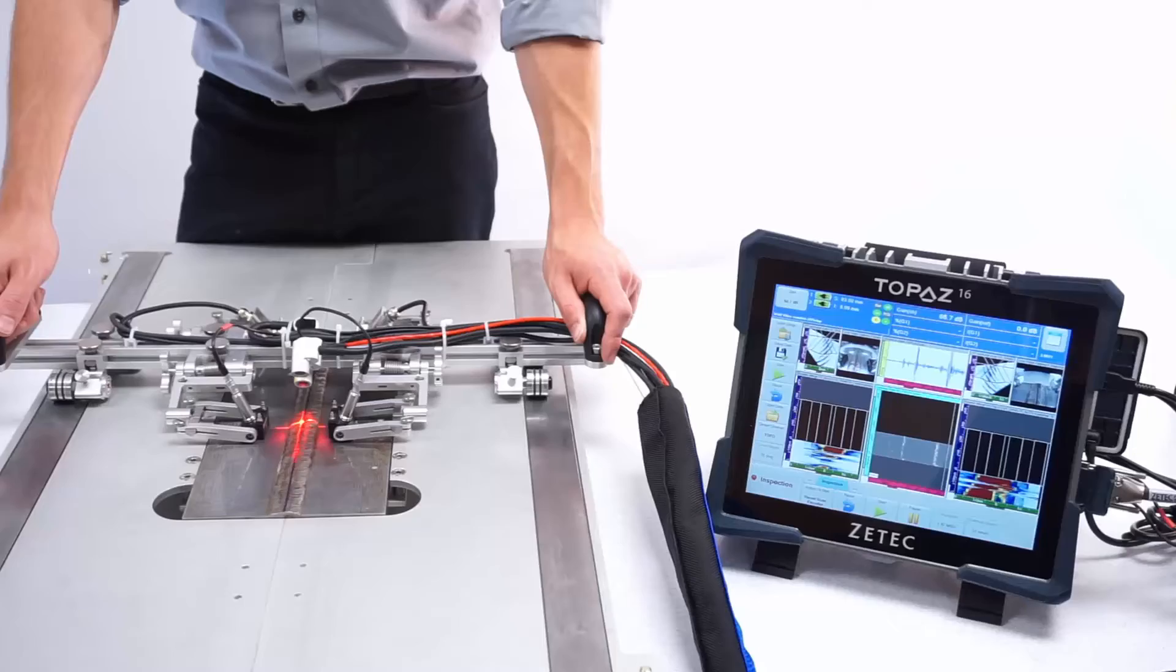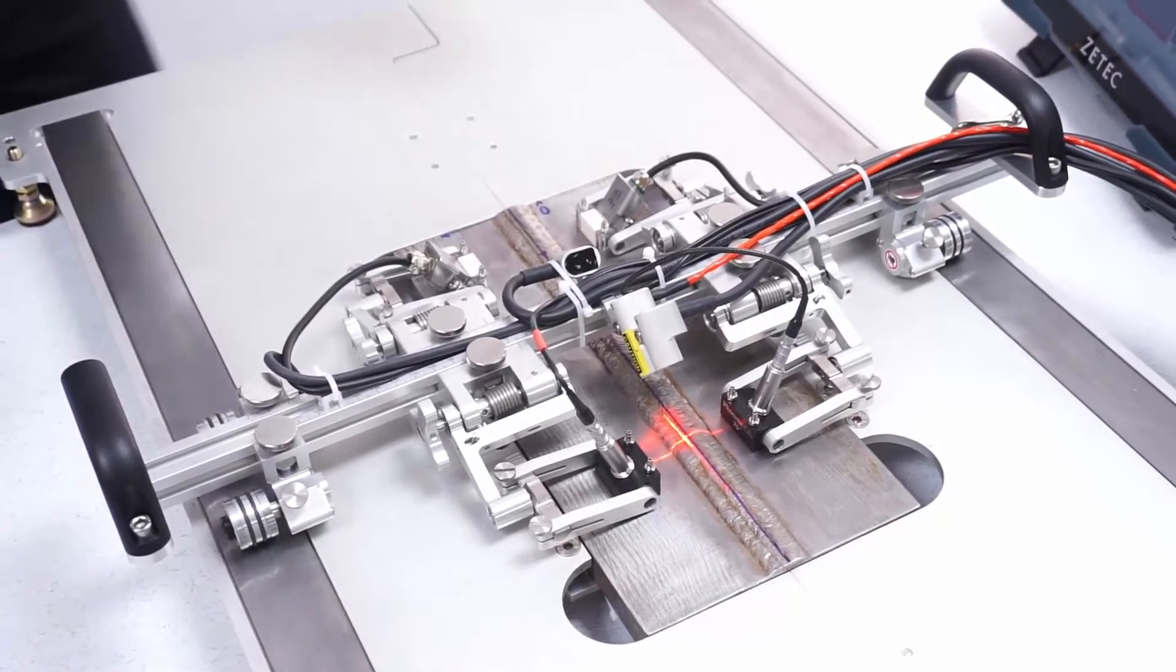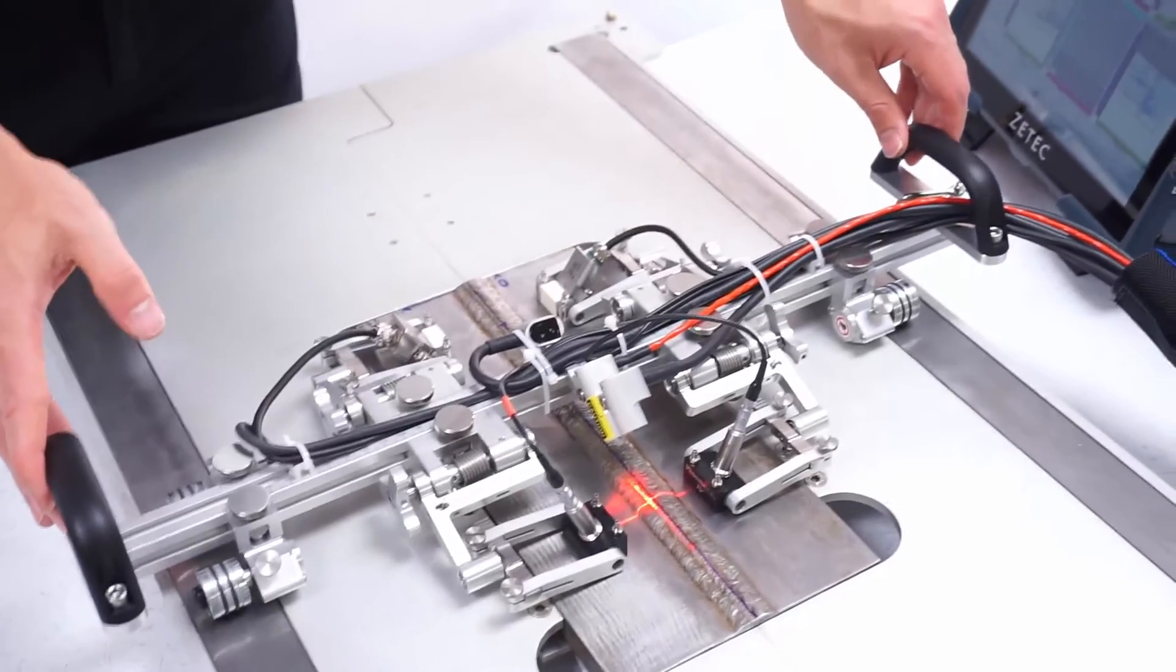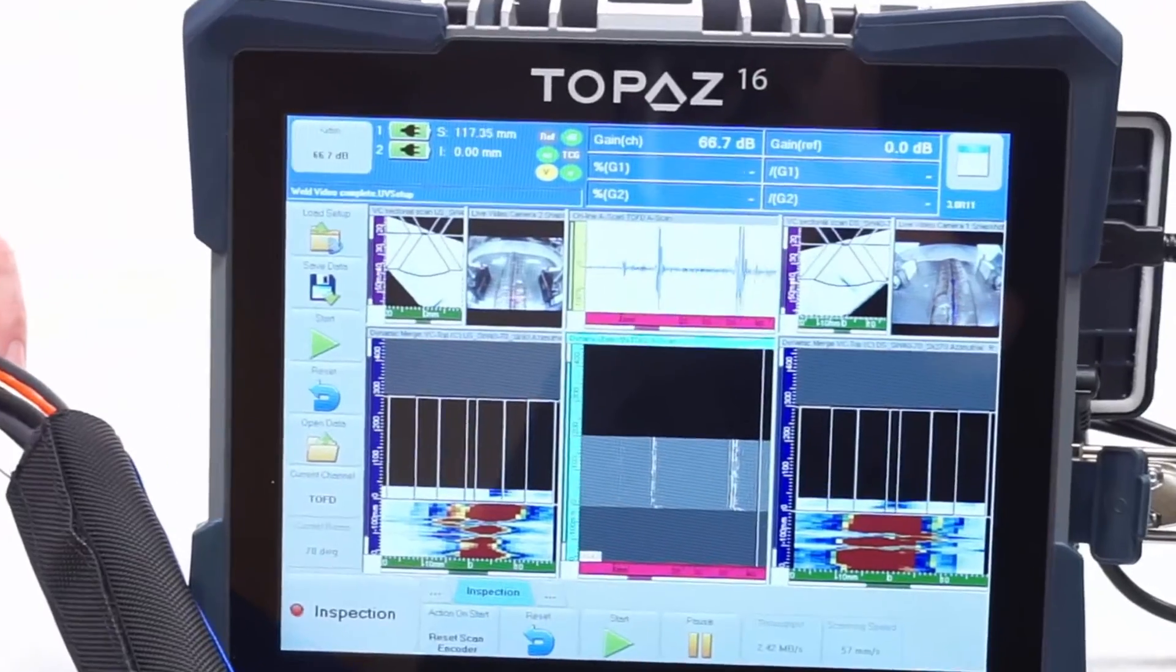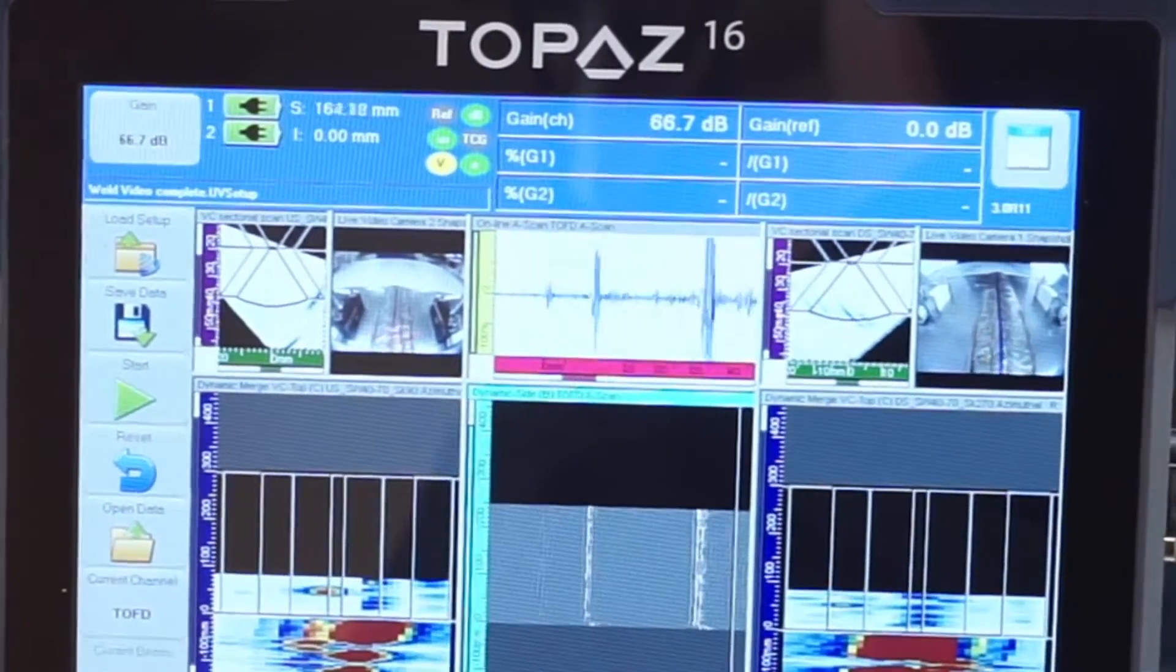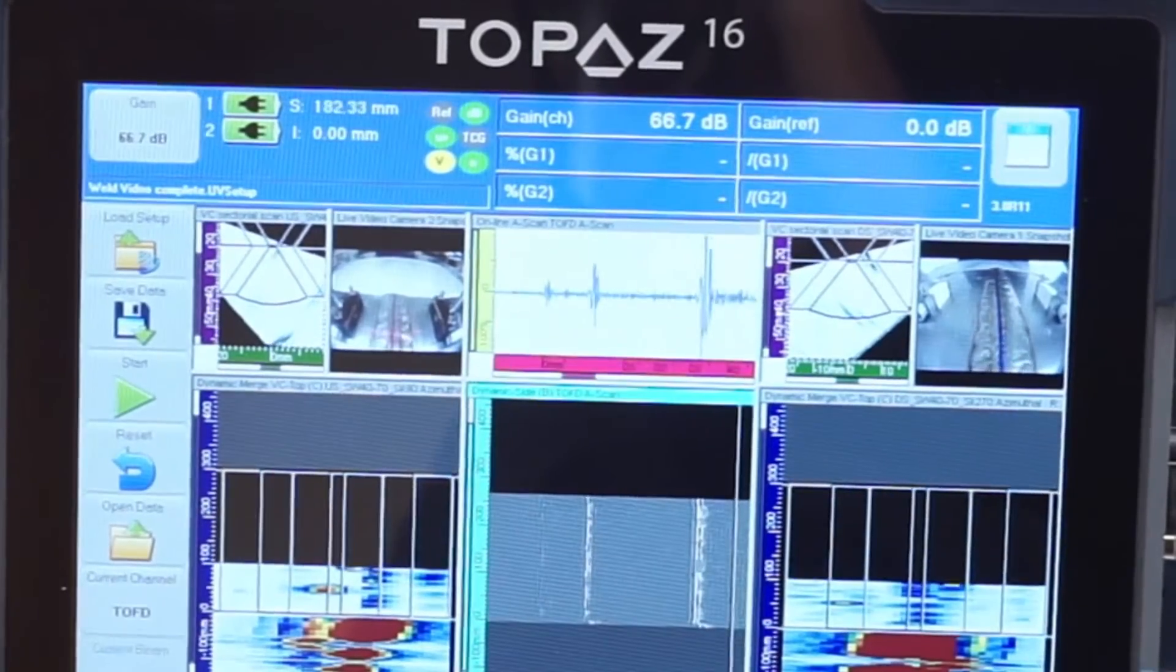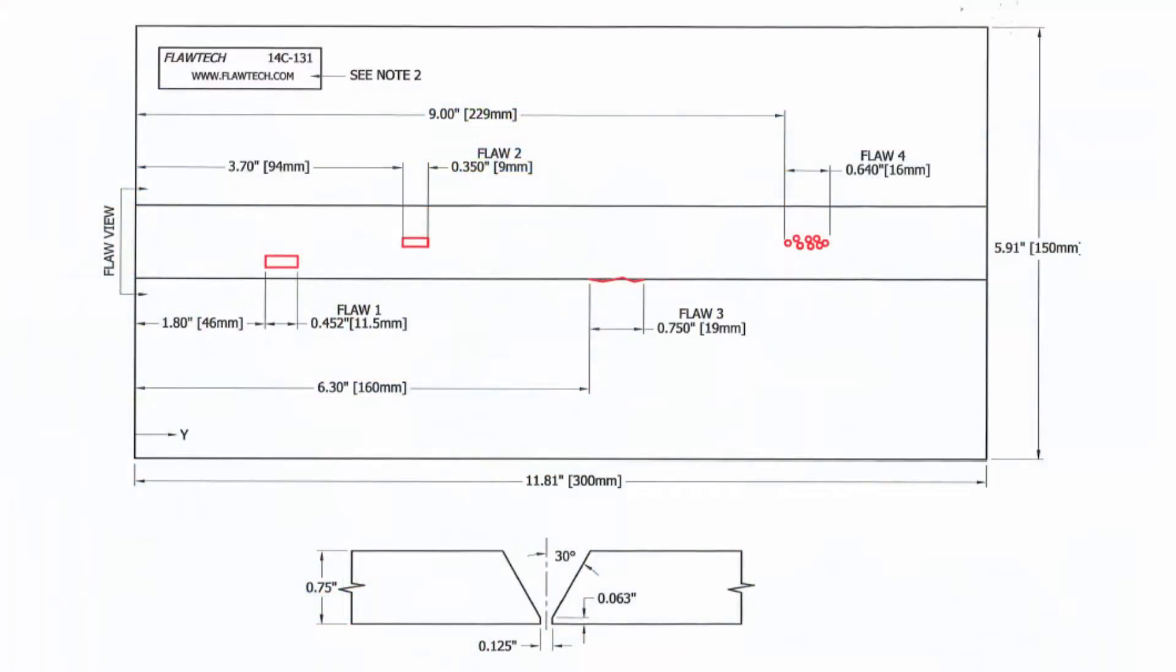The cameras are extremely useful for monitoring the coupling of the probes on the component surface and potential drifting of the scanner from the weld centerline. The video images can be displayed on the TOPAS screen during data acquisition and can be saved with the ultrasonic data to provide additional information during data analysis.